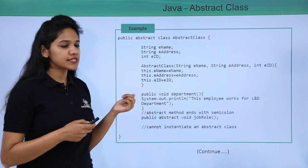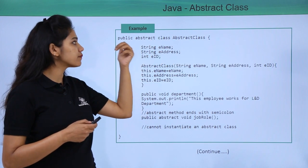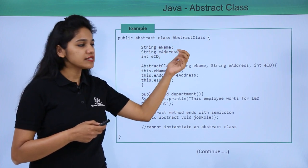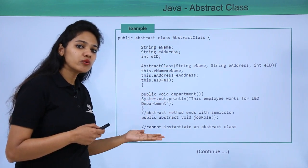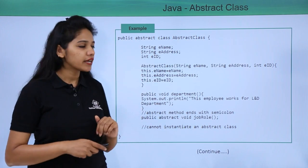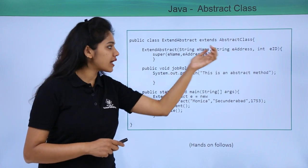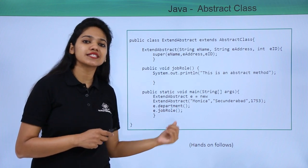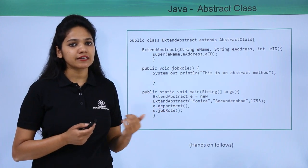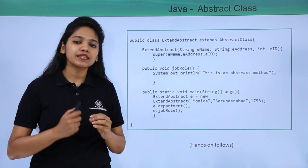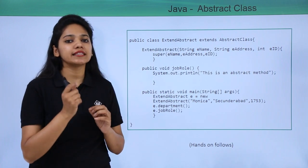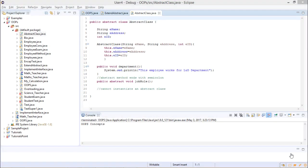Now let's understand with the help of an example. We have created an abstract class with certain variables, non-abstract methods, and abstract methods. In the next class, we extend the abstract class and define each of its methods. Then we'll see how to instantiate the extending class and call those methods.